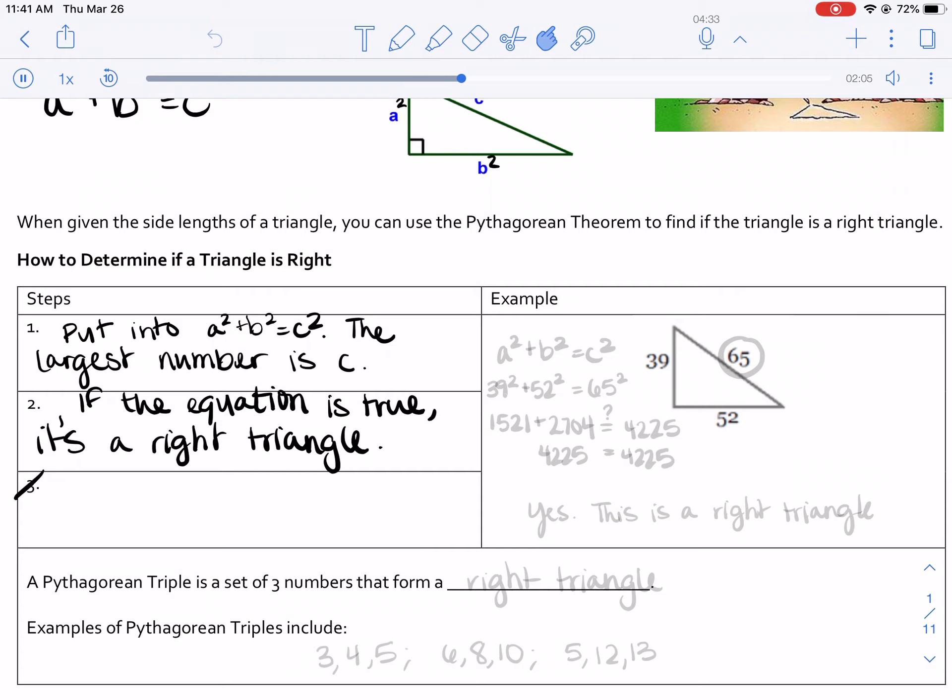So let's go ahead and do our example. We're going to go ahead and write our formula. You should always, always, always start by writing a² + b² = c². Then let's plug in our numbers. My largest number is 65, so that's the number I'm going to put in for c.